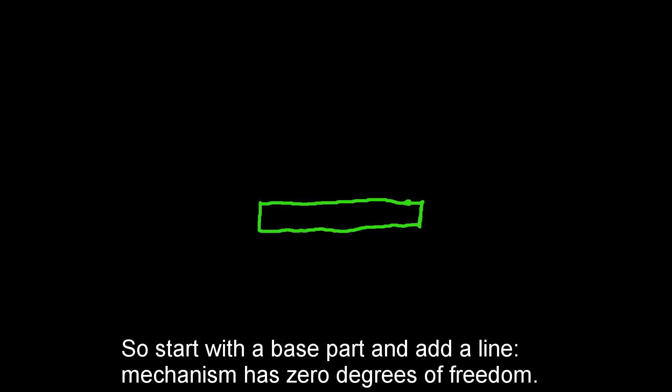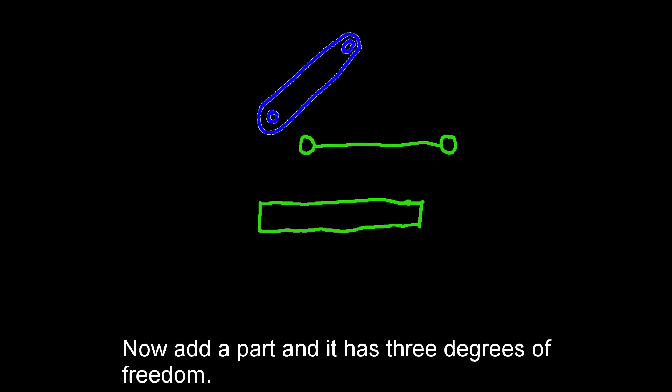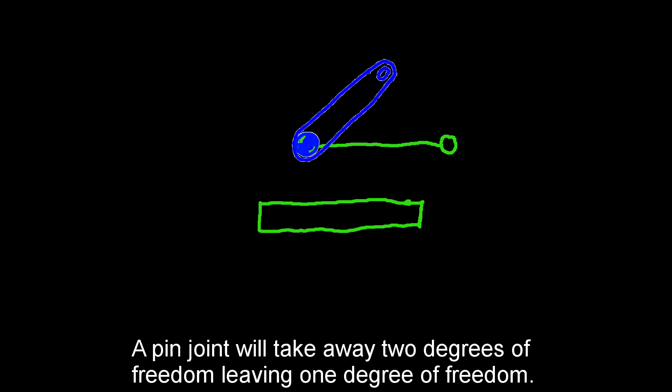Start with a base part and add a line. The mechanism has zero degrees of freedom. Now add a part, and it has three degrees of freedom. A pin joint will take away two, leaving one degree of freedom.